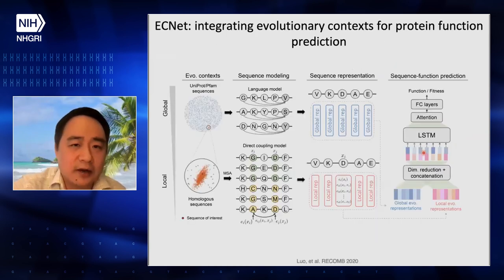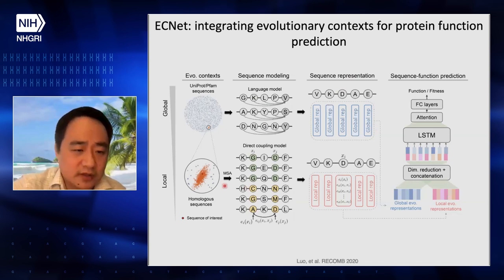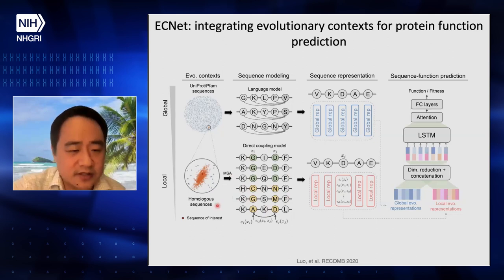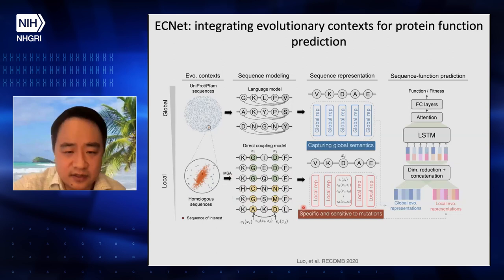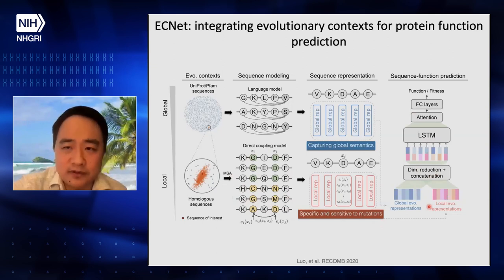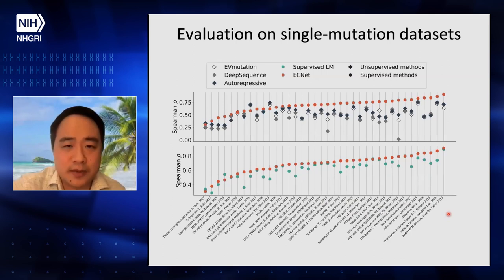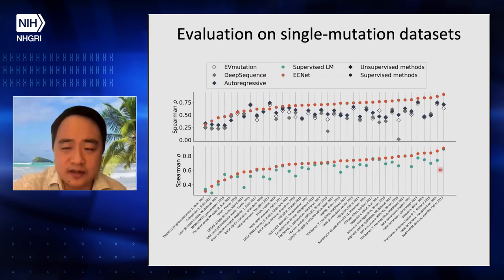This gives us insight that we can use co-evolution patterns to form features. Our model is called ECNet, integrating evolutionary context, global context, and local context for protein function prediction. On the top, we use a global language model to extract protein sequence representations. On the local side, we have a model learned from the multiple sequence alignment of homologous sequences — close, similar sequences. We use them to learn features that are sensitive to mutations. Then we integrate all these features together to predict protein function. We evaluated this on a large collection of deep mutational scanning data on single mutation datasets and performed rigorous cross-validation, showing it works much better than previous unsupervised versions such as EVFold or DeepSequence, and also better than supervised models developed by the machine learning community.